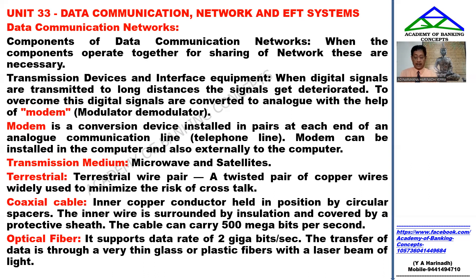The unshielded twisted pair is called UTP. Next, coaxial cable: it has an inner copper conductor surrounded by insulation, which is then covered by a conductive shield. This prevents energy loss during transmission. The cable can travel longer distances and supports speeds up to 500 megabits per second, making it a faster advanced version of cabling.